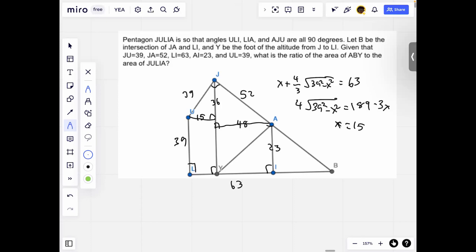And then it's asking, we want to find the area of ABY to the area of JULIA. So notice that JAT and ABI are similar because AT is parallel to IB.